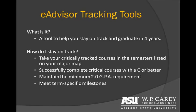Staying on track will ensure that you graduate in four years. In order to stay on track you will need to follow your major map and take courses in the semester listed, achieve grades of C or better in your critically tracked courses, and maintain a 2.0 cumulative GPA, in addition to meeting certain term-specific milestones.